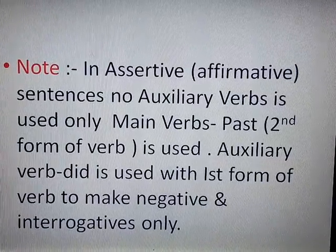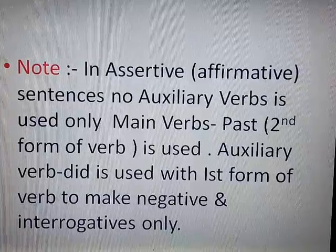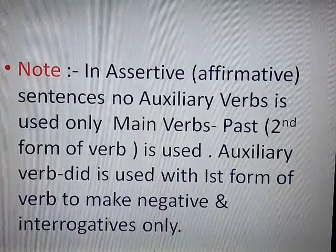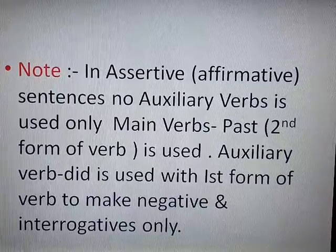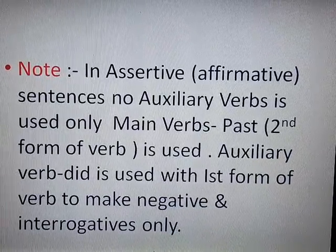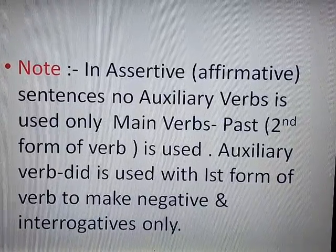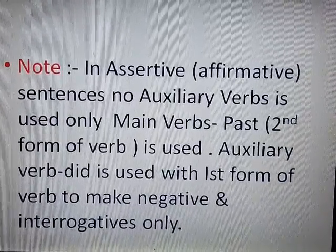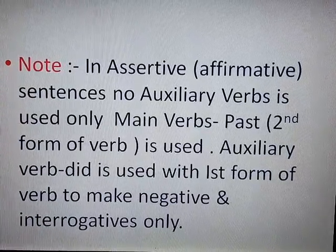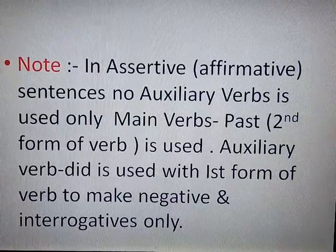The auxiliary verb 'did' is used with the first form of the verb to make negative and interrogative sentences only. So 'did' is used in past indefinite for interrogative or negative sentences, but the main verb takes the first form — not the second form — in those cases.